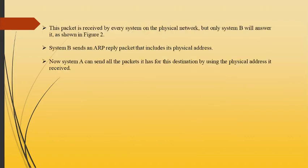This packet is received by every system on the physical network, but only system B will answer it, as shown in Figure 2. System B sends an ARP reply packet that includes its physical address. Now system A can send all the packets it has for its destination by using the physical address it received.